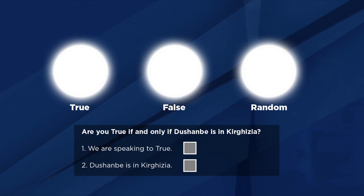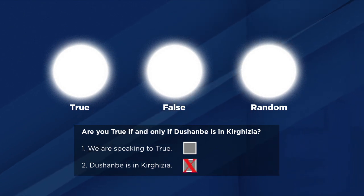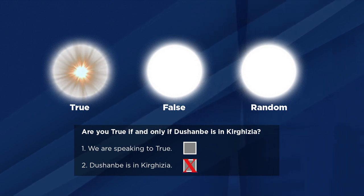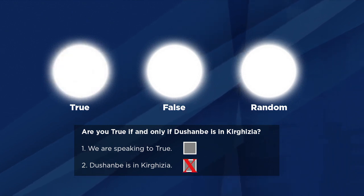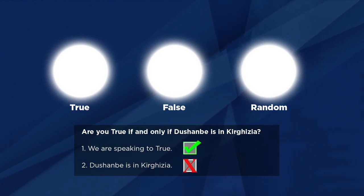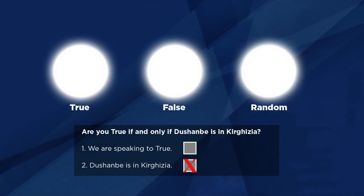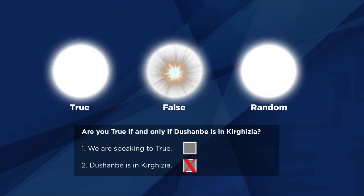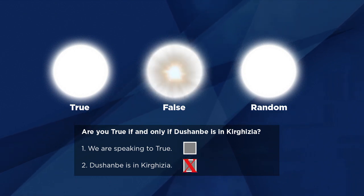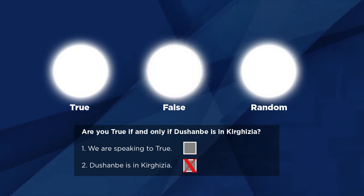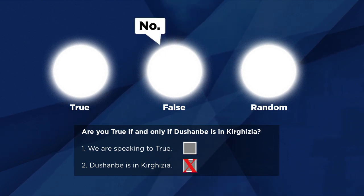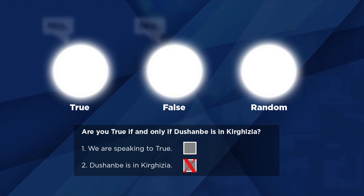We already know that Dushanbe is not in Kyrgyzia, so item two is false. Knowing that, what will True say if we ask him this question? He'll reason that item one is true in this case, and therefore that the truthful answer is no, and that's what he'll say. And if we address the question to False? He'll reason that item one is false, and therefore that the truthful answer is yes, and he'll lie and say no. In other words, regardless of whether we're speaking to True or to False, the answer will be no.